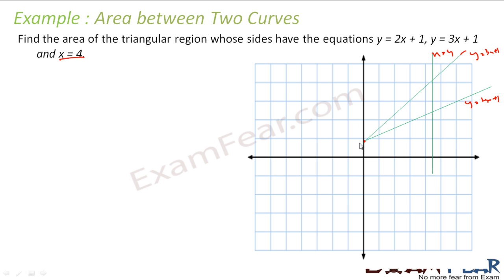Finding the points of intersection of all these lines, we get this point as (0, 1), this point as (4, 13), and this point as (4, 9).